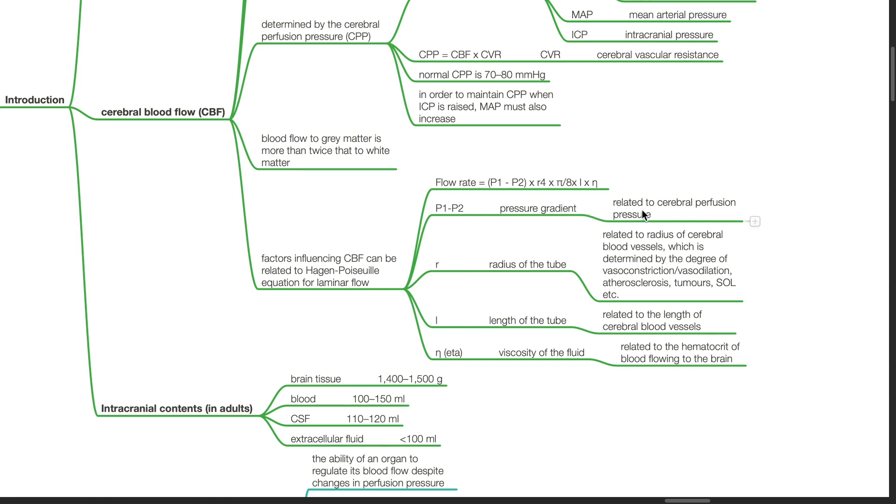R stands for the radius of the tube, which is related to the radius of cerebral blood vessels, which is determined by the degree of vessel constriction or vessel dilation, atherosclerosis, space-occupying lesions, etc.